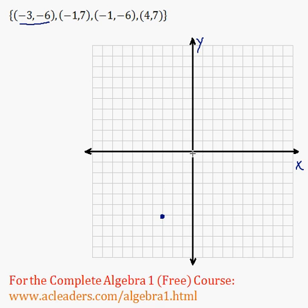Negative 1 and 7 right there. Negative 1 and negative 6. So negative 1 and negative 6. And finally just 4 and 7.